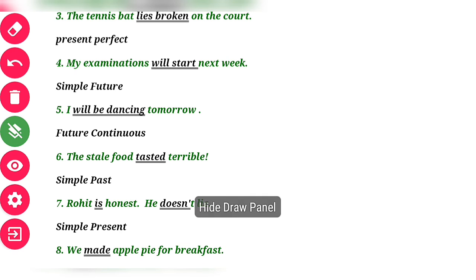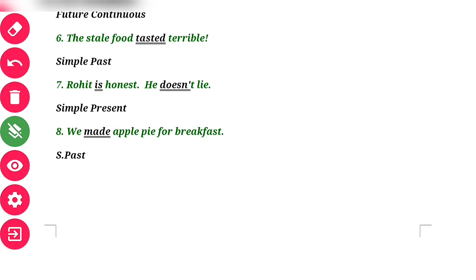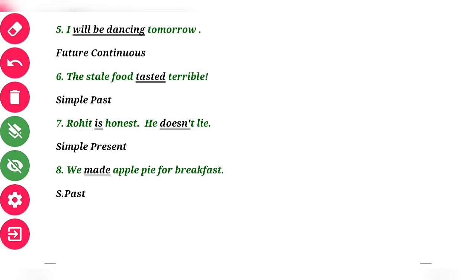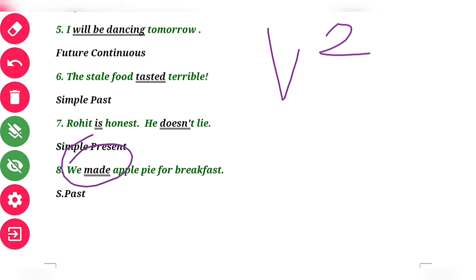Question number 8 is the last point of this exercise: 'We made apple pie for breakfast.' 'Made' is again V2 — Simple Past. In this way, students, we have completed Exercise A.